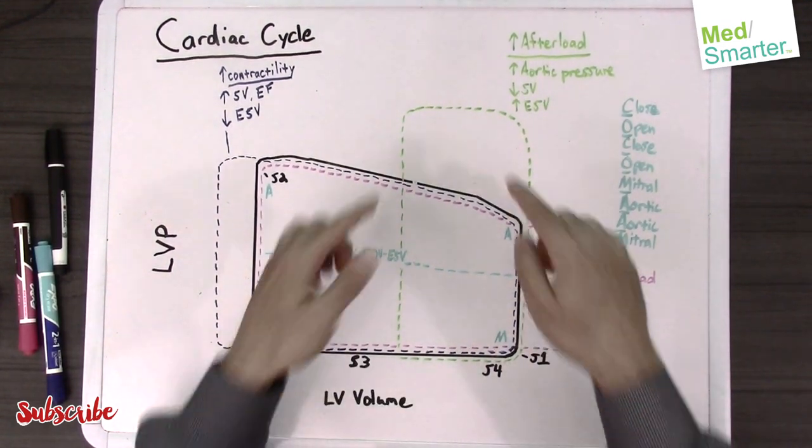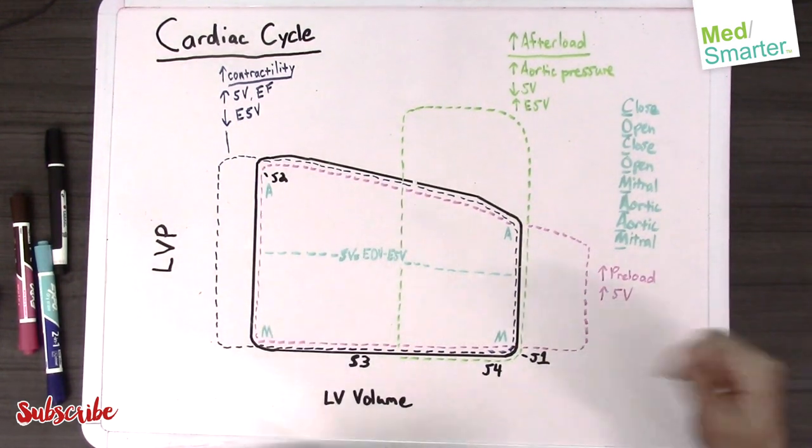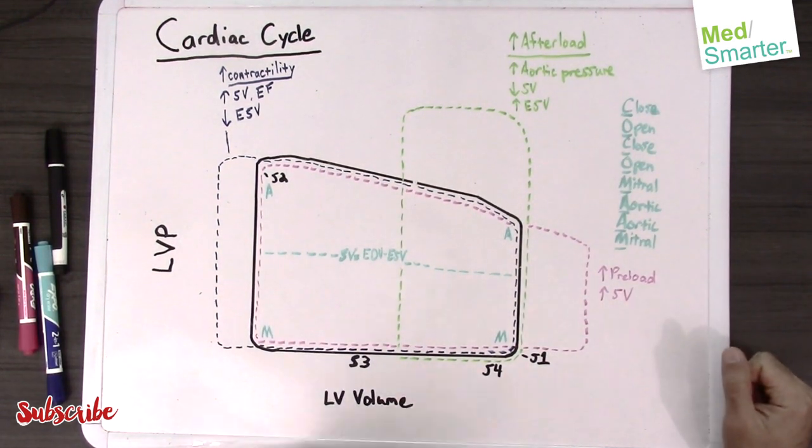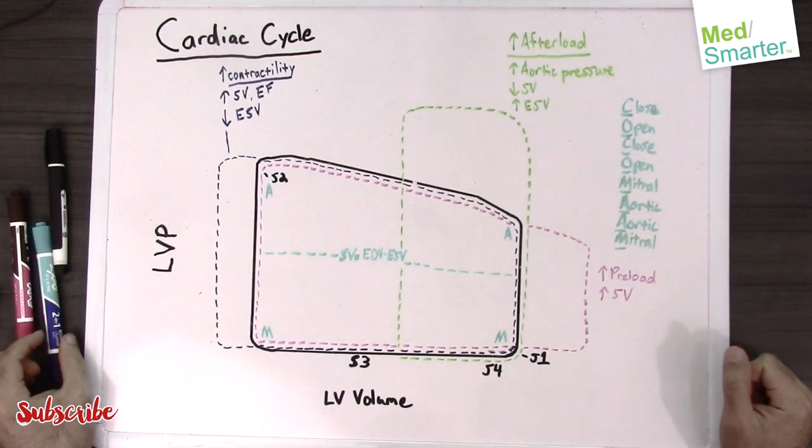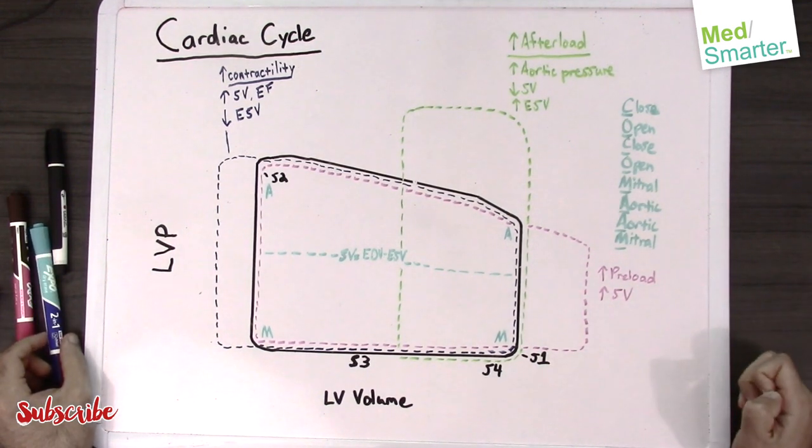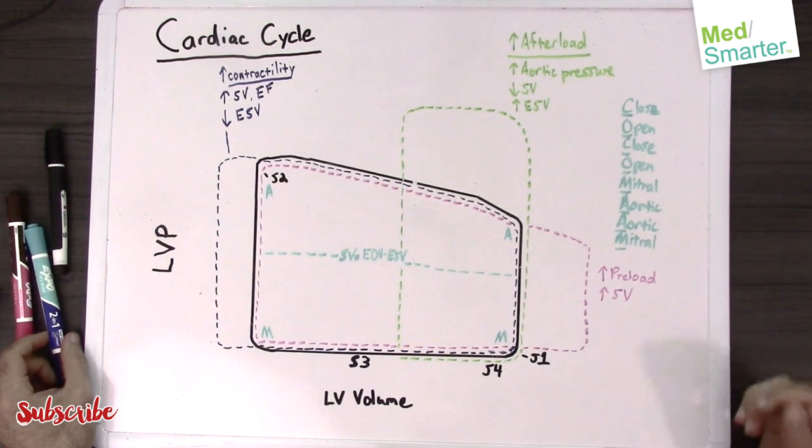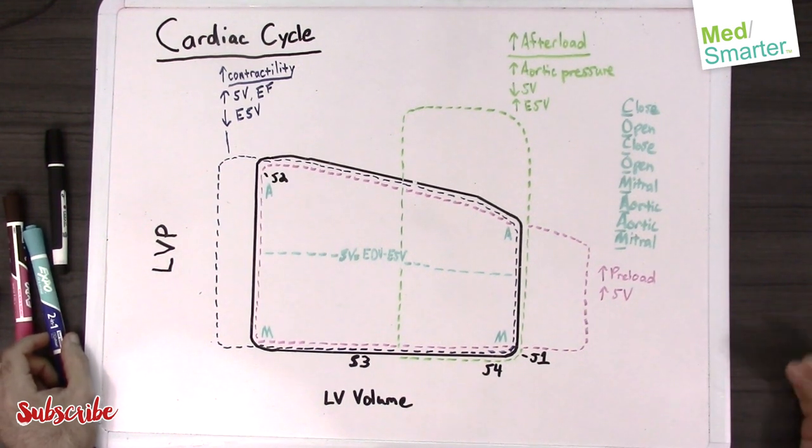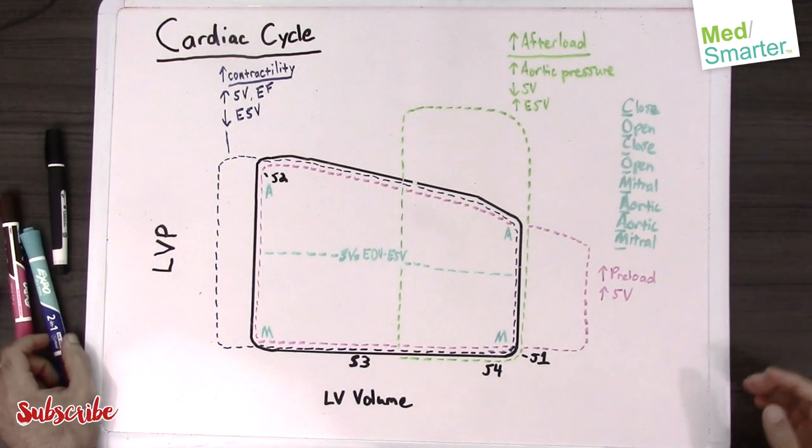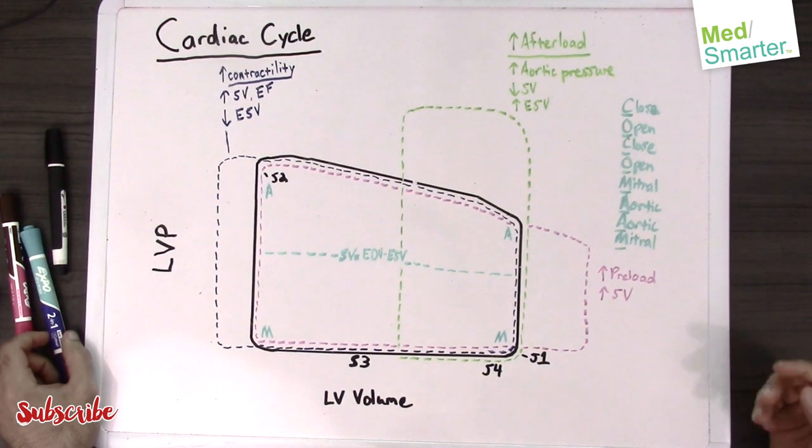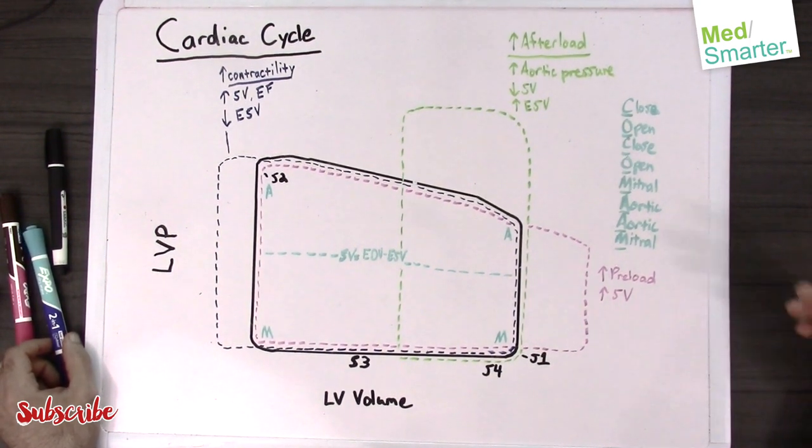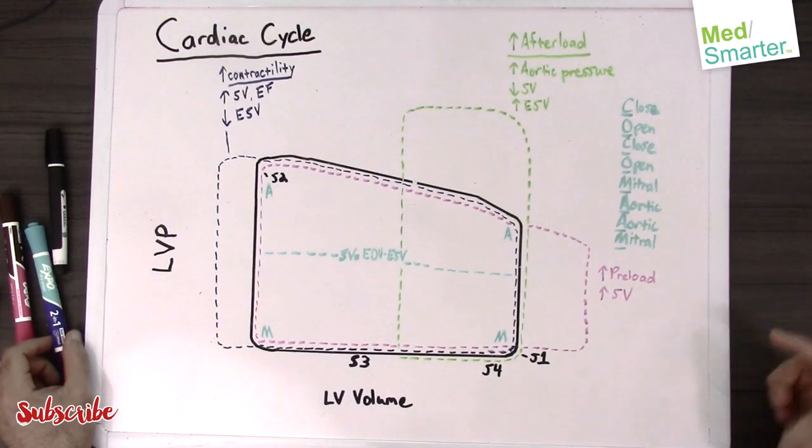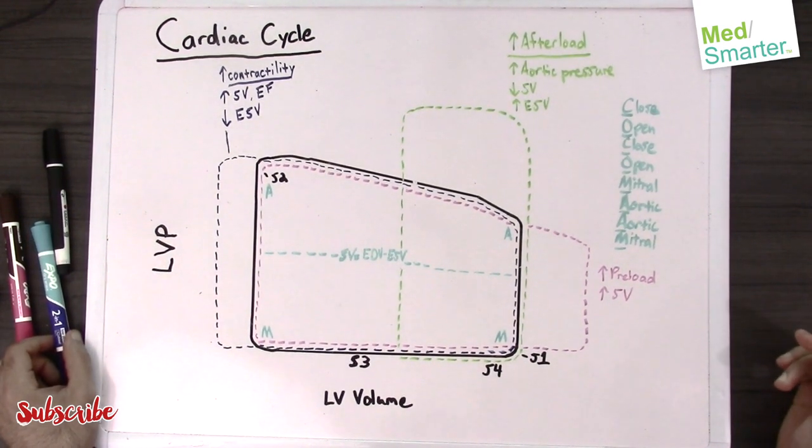The last scenario I want to talk about is when we have high contractility. This could be a scenario where we have some sort of beta agonist on board, or we're exercising so we're sending an endogenous signal to the heart for it to contract more thoroughly, or we could have a medication like digoxin which also increases contractility.